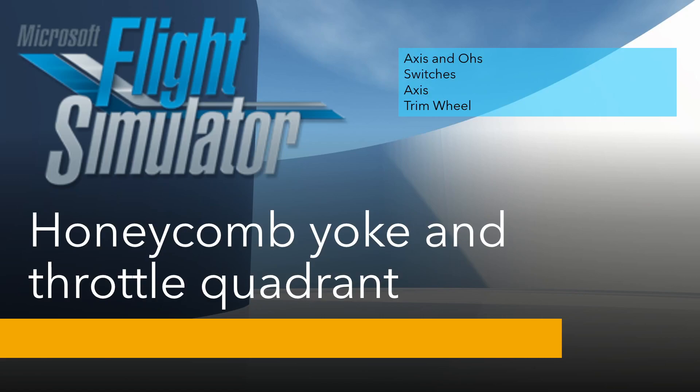Hi there and welcome to video number three since I've bought a Honeycomb yoke and throttle quadrant. Today I'm going to look at Axes and Os and show you a bit of switch allocation: how to set an axis and how to add some functionality for the trim wheel. It's all based around the throttle quadrant, not so much the yoke - the yoke I'm going to leave alone as it is.